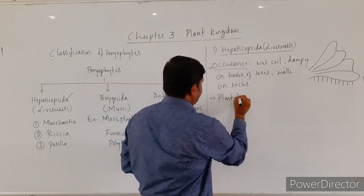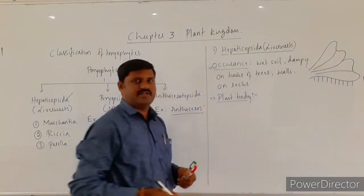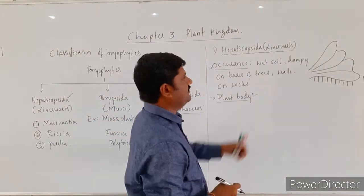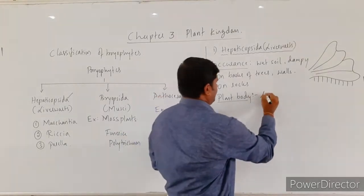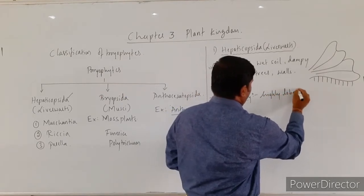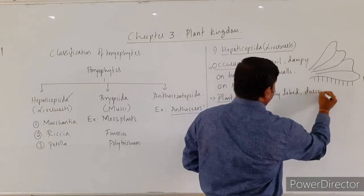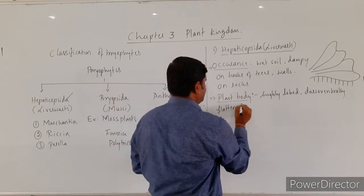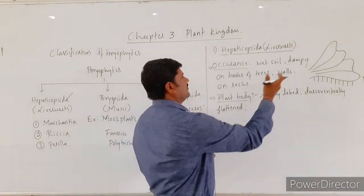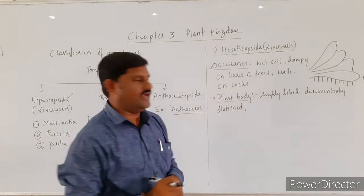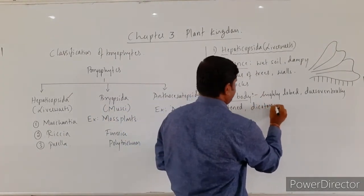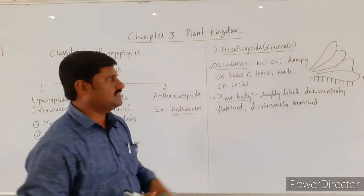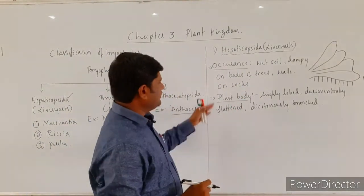Next, let us look at the plant body. The plant body is highly lobed, dorso-ventrally flattened, and dichotomously branched.